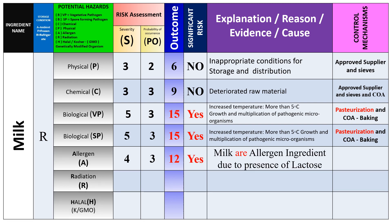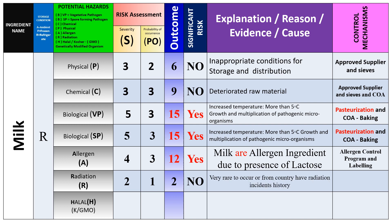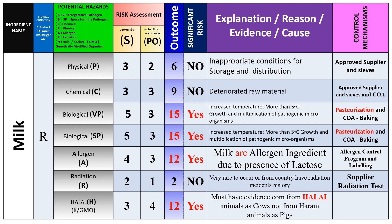The allergen hazard is also significant because milk is an allergen ingredient due to the presence of lactose protein. Controls include an allergen control program and labeling indicating the product contains or may contain milk — this will be covered later in the allergen control program series. Radiation is not very common but we can request irradiation test results from the supplier to confirm the milk is free from radiation hazards. For halal, we must have evidence from the supplier via a valid halal certificate or DNA analysis test.